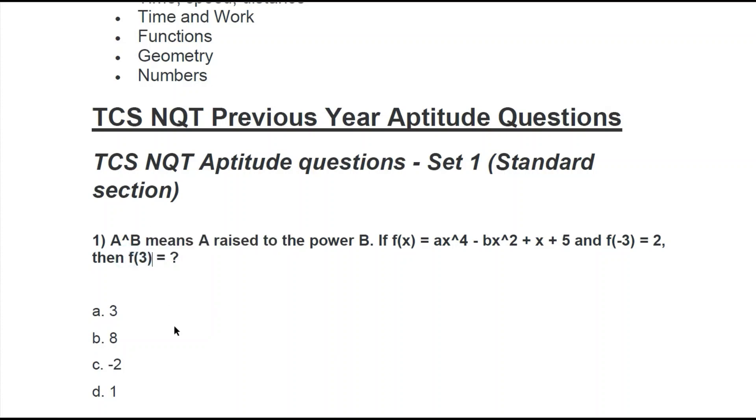How we need to do this is: if the function of -3 results in 2, then we need to put x = -3 in this equation and write the equation as 2. From there we will get an equation relating to a and b.